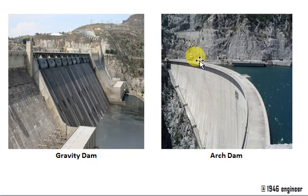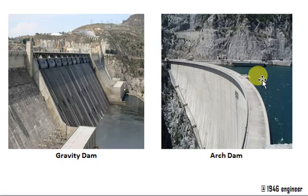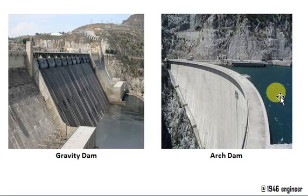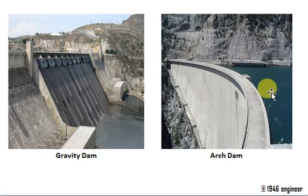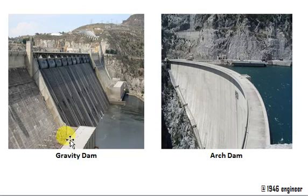In an arch dam, it is curved in plan. It has a convexity on the upstream side. This diverts the horizontal thrust to the strong abutments. This dam needs strong abutments — that is an important point to note.